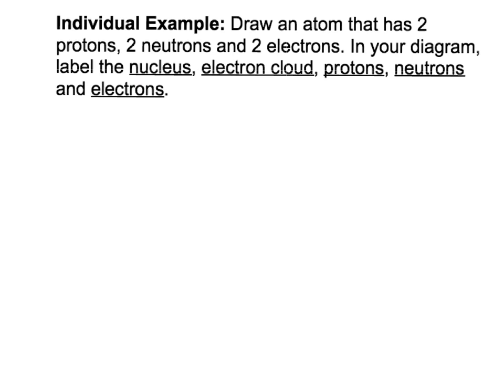For our individual example, I would like you to draw an atom that has two protons, two neutrons, and two electrons. Then I would like you to label the nucleus, the electron cloud, protons, neutrons, and electrons. So you can use what we just talked about and do this example. Pause the video, and then resume the video when you're done and see if yours looks like mine.